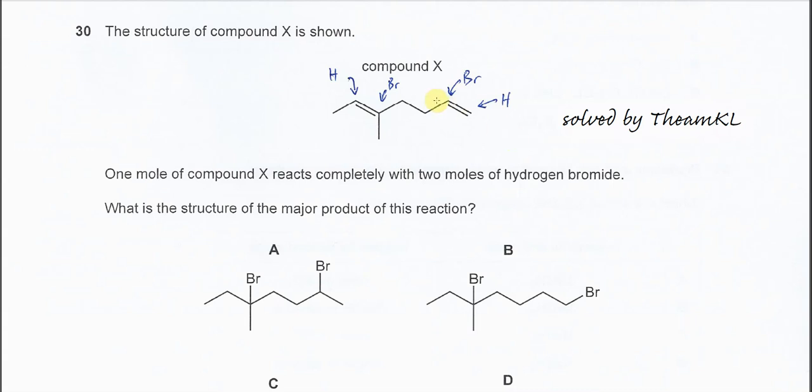Question 13. The structure of compound X is shown. One mole of compound X reacts completely with two moles of HBr. What is the structure of the major product for this reaction?